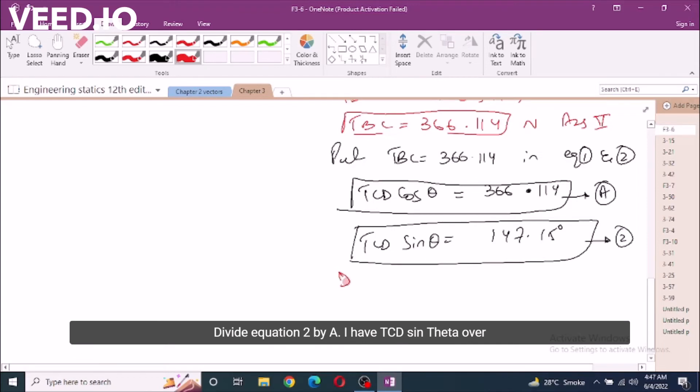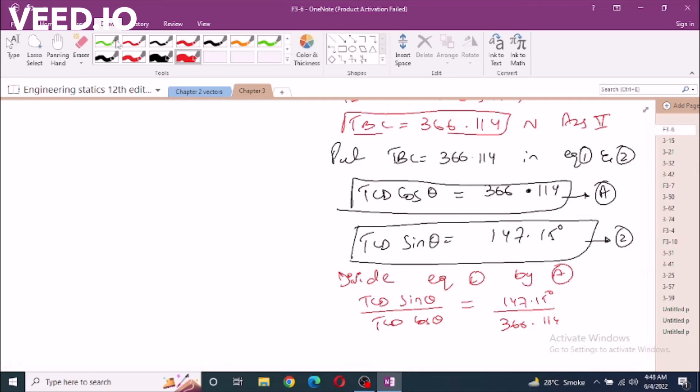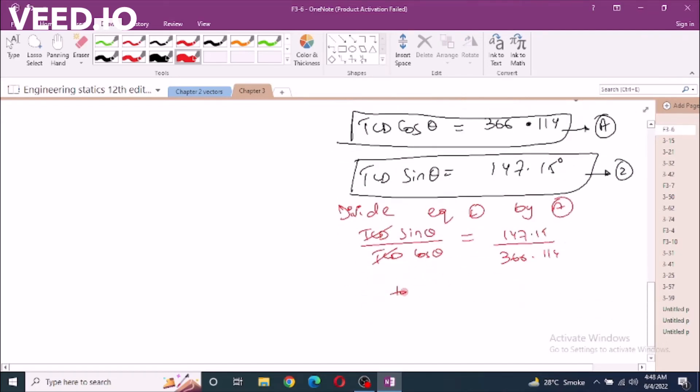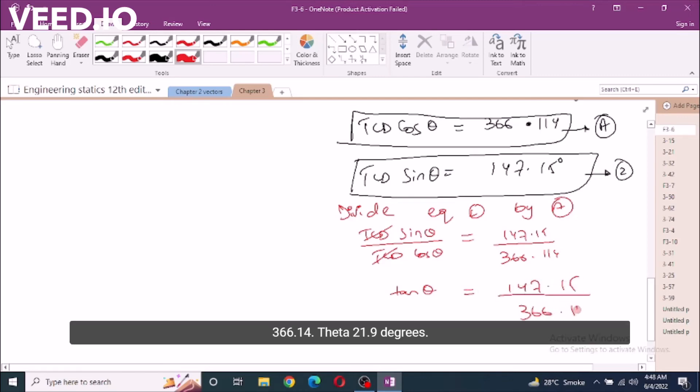To divide equation 2 by A, I have TCD sin theta over TCD cos theta equals 147.15 divided by 366.114. TCD will cancel out. Sin theta over cos theta equals tan theta equals 147.15 over 366.114. Theta equals 21.9 degrees. Now I can put this theta into this equation, equation A.